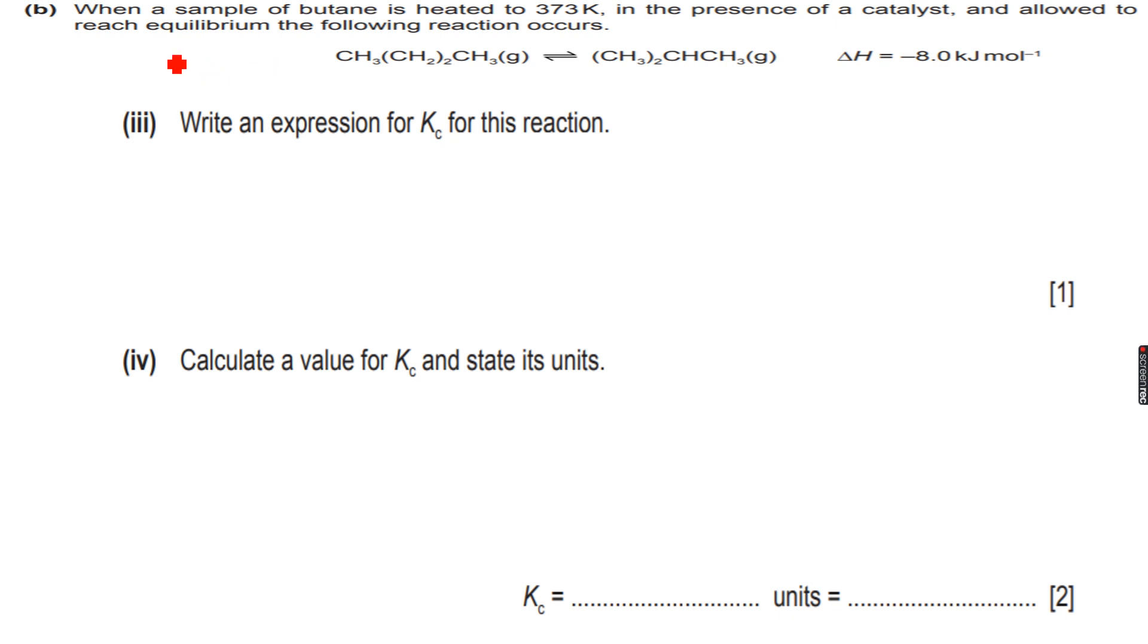Write an expression for Kc for this reaction. So Kc will be equal to the concentration of methylpropane which is CH₃ CH CH₃ twice, raised to the power of 1, upon concentration of butane which is CH₃ CH₂ twice CH₃. Both are raised to the power of 1 because the coefficient in the stoichiometric equation is 1. So this is my expression for Kc.